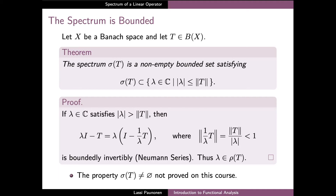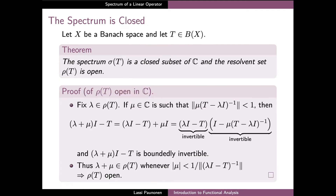Finally, the property that the spectrum is not empty would require different machinery and we will not study this proof in our current course. As the second application of the Neumann series, we can now prove that the resolvent set is open. To do this, we take an arbitrary point in the resolvent set and aim to show that this point has a neighborhood which is completely contained in the resolvent set. To this end, we take a complex number mu and consider the operator lambda plus mu times identity minus T.